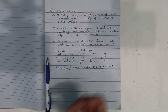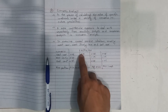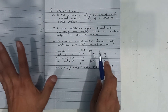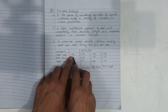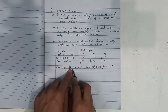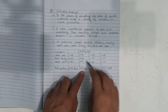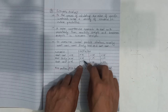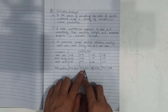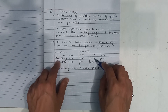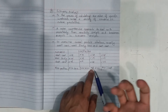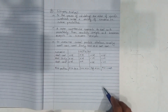In scenario analysis, we calculate present worth (PW) or annual worth (AW) for each case. For example, for a particular project: if the worst case is positive, the most likely is positive, and the best case is positive — that project is risk-free. If the worst case is negative but the most likely and best case are positive — that is low risk. If the worst case is negative, the most likely is also negative, and only the best case is positive — that is high risk. If all cases including the best case are negative, do not invest.